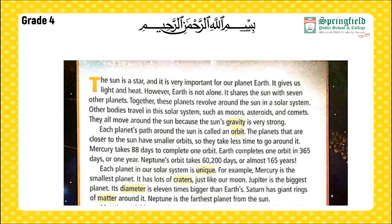Mercury takes 88 days to complete one orbit. Earth completes one orbit in 365 days, or one year. Neptune's orbit takes 60,200 days, or almost 165 years. Each planet in our solar system is unique.